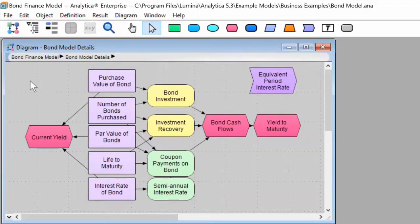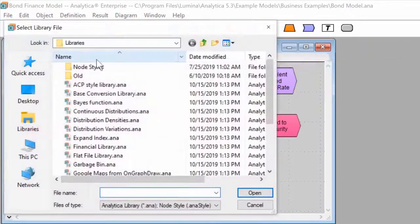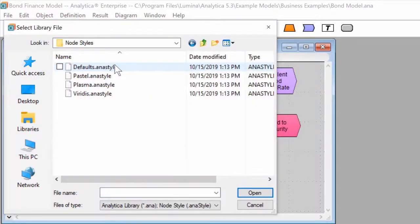Not feeling creative? No problem. We've included a few new styles that you might prefer to the default. To use them, simply go to File, Add Library while making sure you're still in edit mode. This will place you in the Libraries folder. From here, select the folder Node Styles and then select and open one of the files inside.